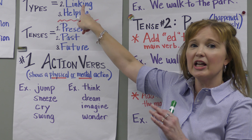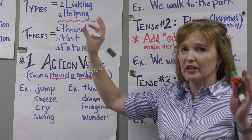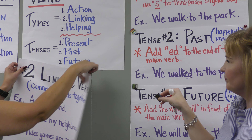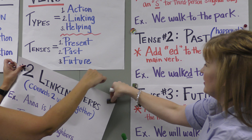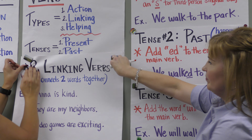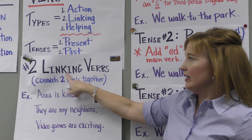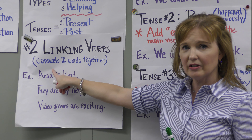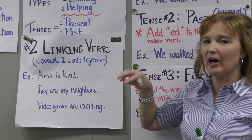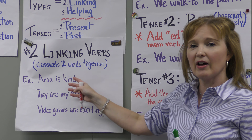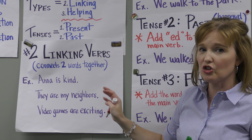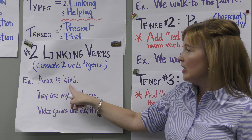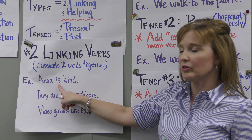The next major category of verb — there are two major kinds: action and linking. So linking is our next kind. Just what the word link means — if you link something together, you connect it. So a linking verb is all about connecting. It's not about an action. So I have three sentences for you to show you what I mean.